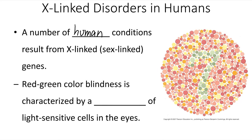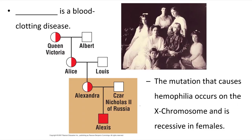Red-green colorblindness is an example, characterized by a malfunctioning of light-sensitive cells in the eyes. Hemophilia is another X-linked condition — it is a blood clotting disease. The mutation that causes hemophilia occurs on the X chromosome and is recessive in females. Here we can see a family pedigree of Tsar Nicholas II of Russia; his son Alexis had hemophilia and passed away relatively early in life. Tsar Nicholas did not have hemophilia, and tracing this back, we can see that for several generations this allele was carried within females of the family who did not have the disease. Only once a male inherited that affected X chromosome did those symptoms show up.